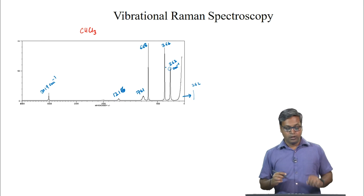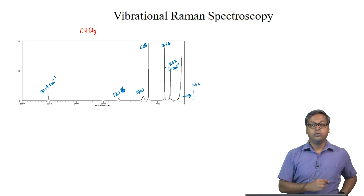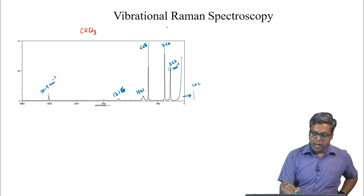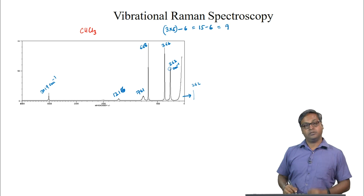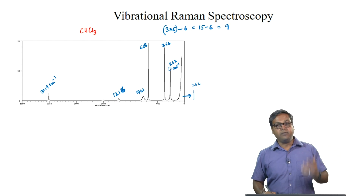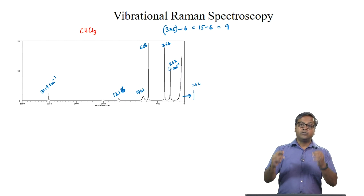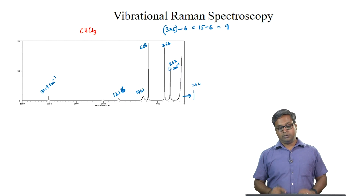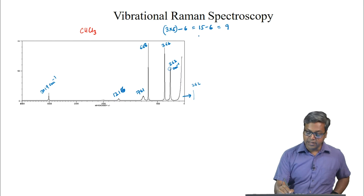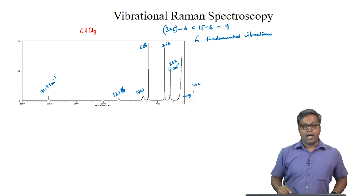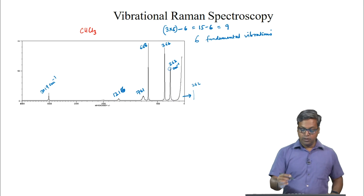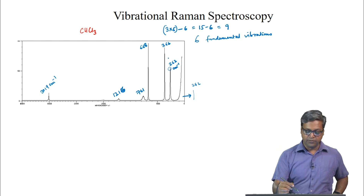Chloroform has 5 atoms, so we have 3×5 minus 6 = 9 vibrations. We can expect 9 vibrations, but 3 of these are doubly degenerate, so we are left with 6 fundamental vibrations, and these 6 vibrations are seen as 6 different peaks in the spectrum.